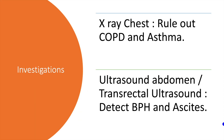Investigations: inguinal hernia is mainly diagnosed clinically; however, certain investigations can be done. Chest X-ray is used to rule out COPD and asthma. Ultrasound abdomen is used to detect ascites. Transrectal ultrasonography is used to detect BPH.